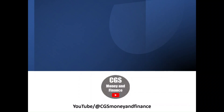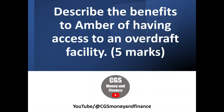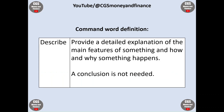We're going to look at potential points that students may consider making in response to this question: Describe the benefits to Amber of having access to an overdraft facility. The question is worth five marks. Being a described question, students are expected to provide a detailed explanation of the main features of something and how and why something happens.